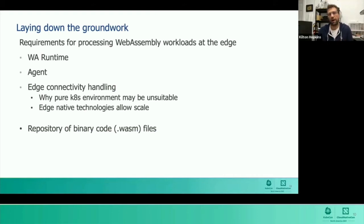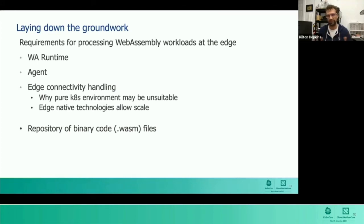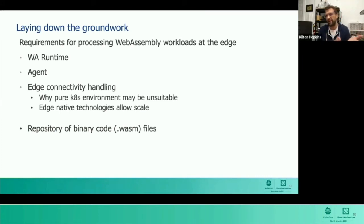The last requirement is you're going to need a repository of the binary code — the WASM files — similar to Docker Hub for Docker containers. Where are you storing? How are you serving? How are you verifying integrity when you get into production at scale? These are all pieces needed. Since we have the requirements, now let's talk about the types of edge deployments where you might want to use Web Assembly.